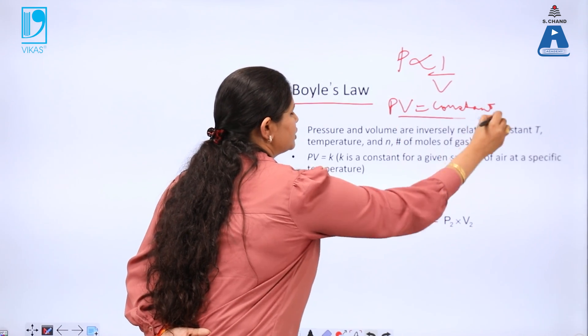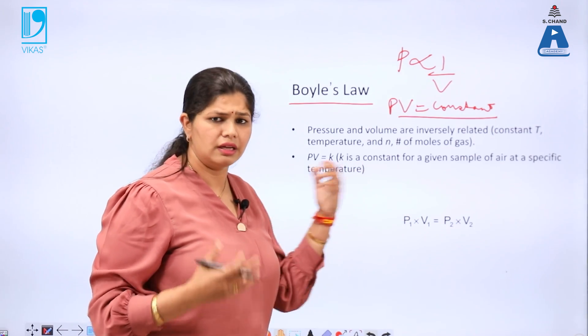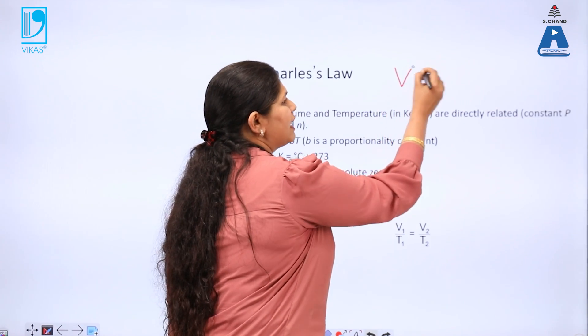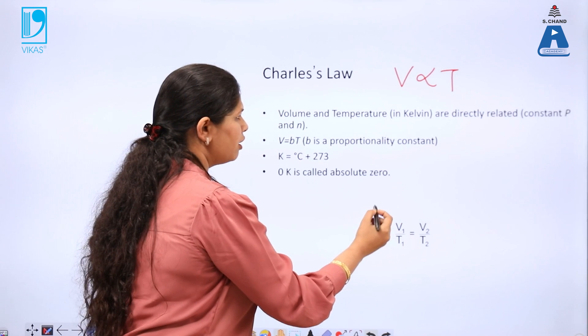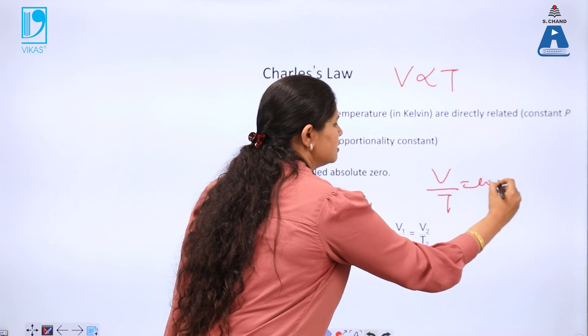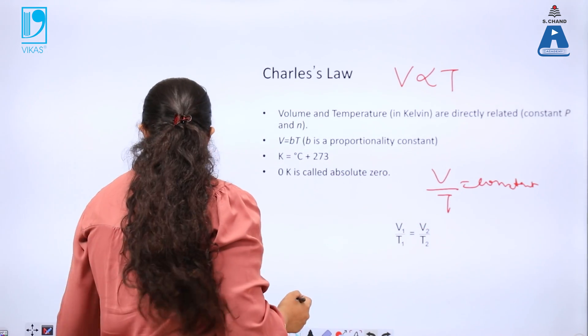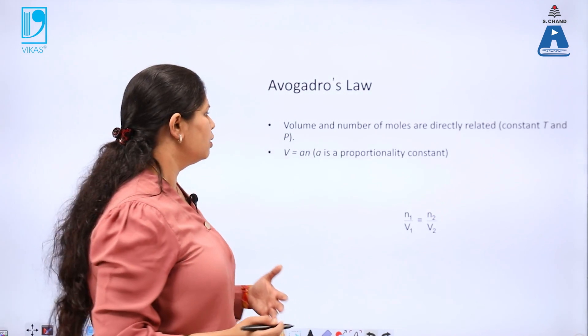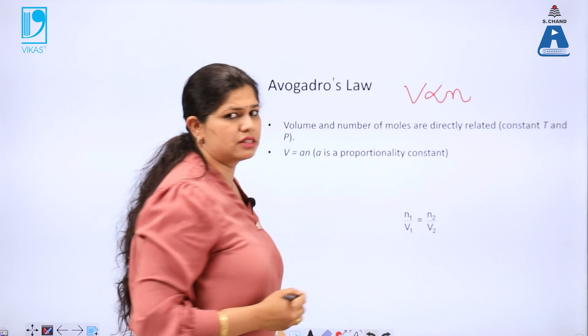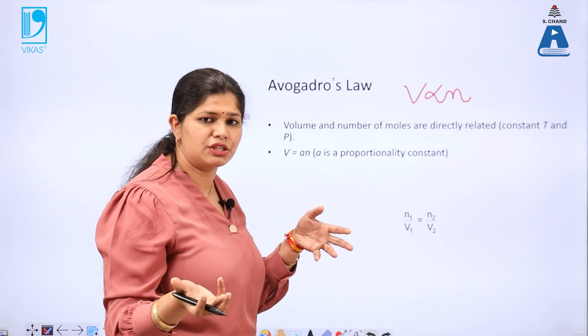The second being Charles' law which says that volume of a gas is directly proportional to temperature or we say that V by T is a constant, so V1 by T1 is equal to V2 by T2. Another is Avogadro's law which says that volume is directly related to the amount of the substance or the number of moles of gaseous species. More the number of moles, more will be the volume covered by that gaseous species.